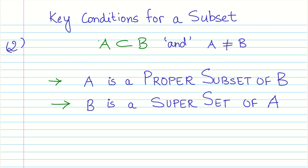The second condition for a subset is that if A is a subset of B and is not equal to B, that is the set A and set B are not equal, which means they do not have exactly the same elements, then we say that A is a proper subset of B and we also say that B is a superset of A.